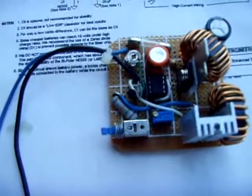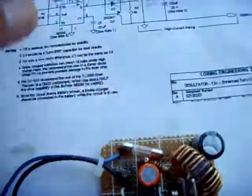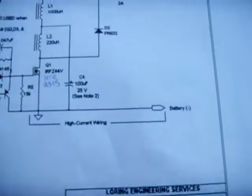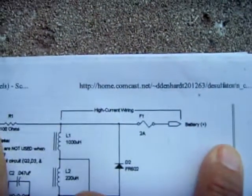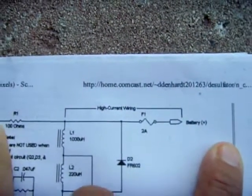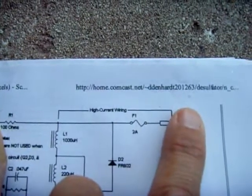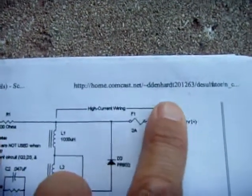I got this schematic from—it says Lorang Engineering Services, and the website was home.comcast.net/d-d-e-n-h-a-r-d-t. Just Google all this stuff here if you want to find it.